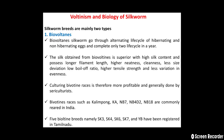Culturing bi-voltine races is therefore more profitable and generally done by sericulturists. Bi-voltine races such as Kalimpong, Ka, Nb7, Nb4, D2, and Nb18 are commonly reared in India. Five bi-voltine breeds namely SK3, SK4, SK6, SK7, and YB have been registered in Tamil Nadu.